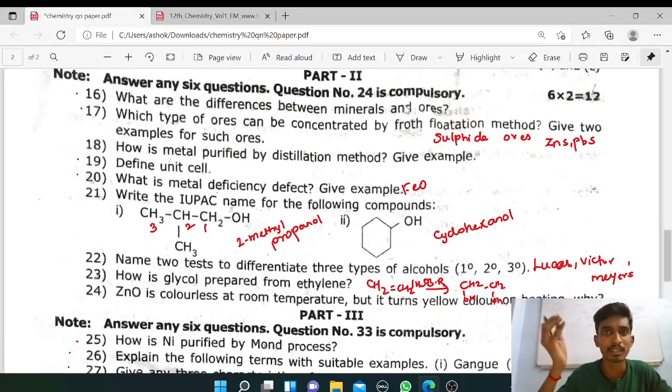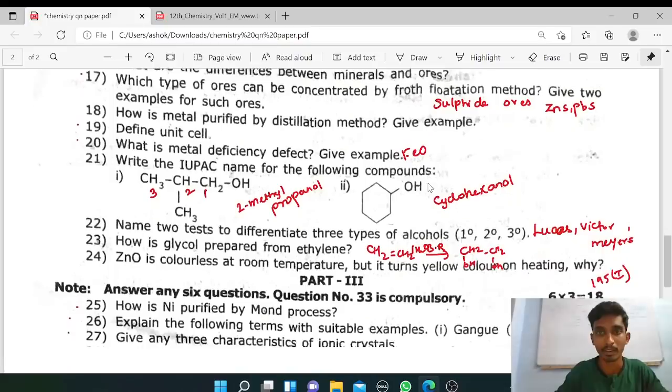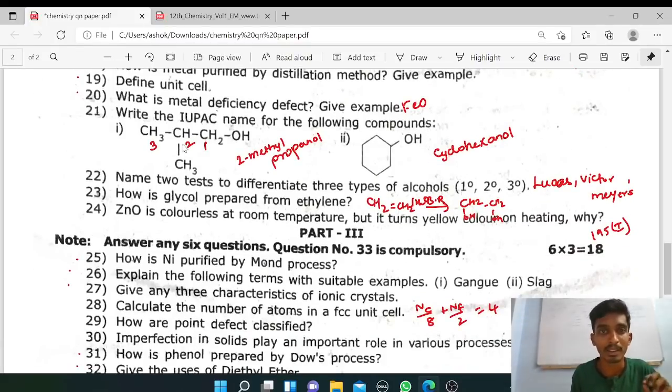Next two mark: difference between minerals and ores, first lesson first question, model question. Next, which type of ores can be concentrated by flotation? Sulphide ores, give two examples: zinc blende, galena. Next book back, how metal is purified by distillation method? Give example. Distillation method is applied for low boiling volatile metals, example: zinc. This is the model, easy. What is unit cell? Define it. Book back question, metal deficiency defect.